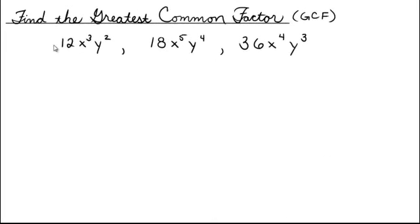We're going to find the greatest common factor, or the GCF, of the following three algebraic expressions: 12x³y², 18x⁵y⁴, and 36x⁴y³. I'm going to factor each one of these monomials out, and I'm going to use those factors to help me find the GCF.